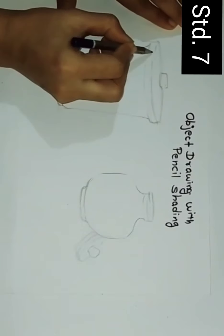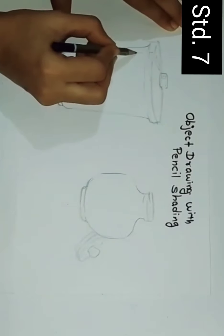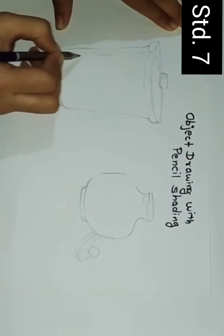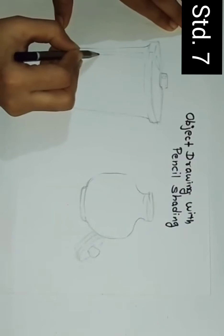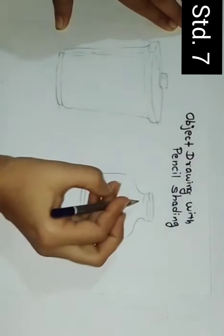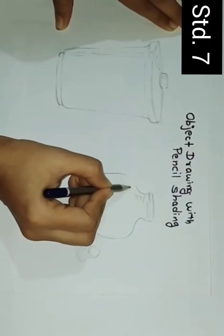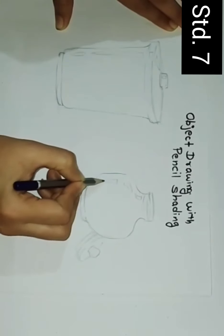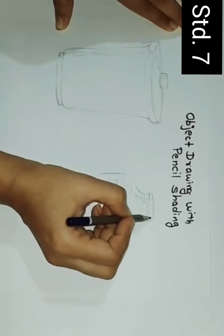अभी मैं यहाँ पे highlight का portion mark कर रही हूँ। Highlight means excess light — जहाँ पे ज़्यादा चमक होती है, light की तरफ जहाँ पे किसी भी object पे चमक होती है, उसे हम highlight कहते हैं।